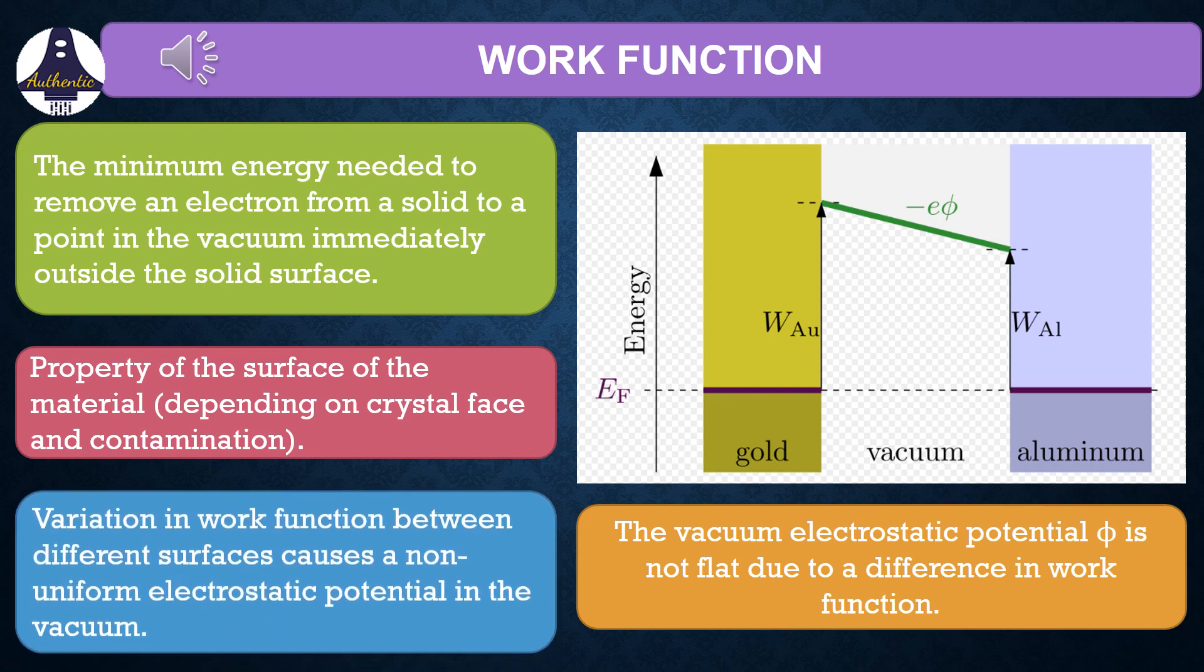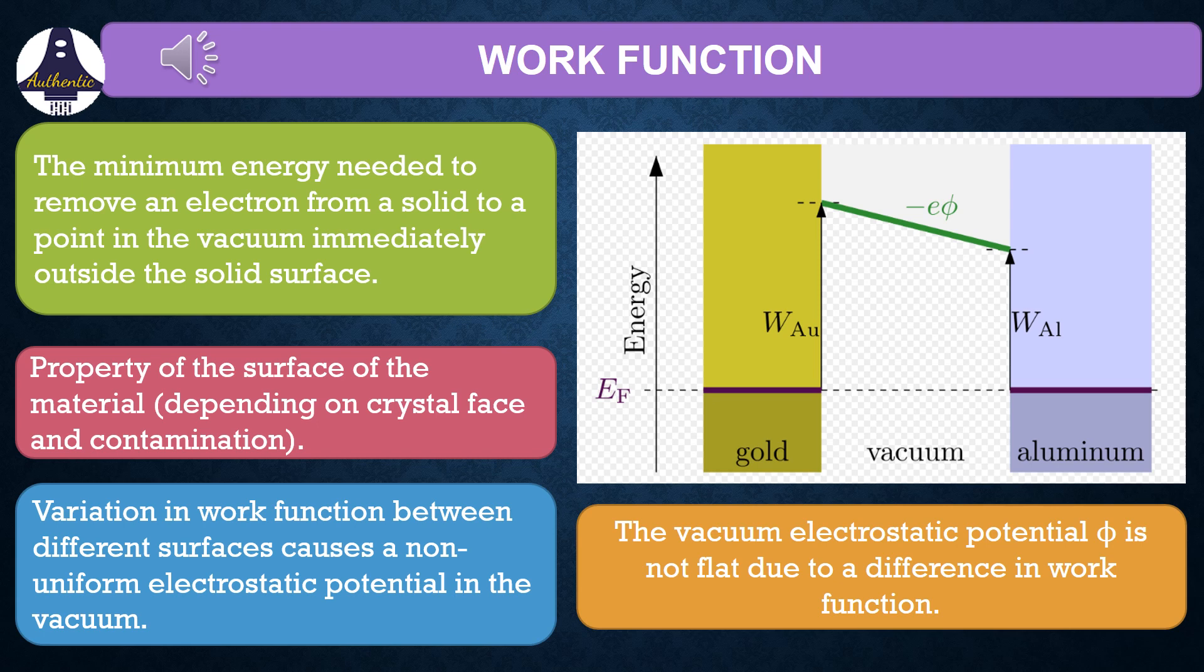And variation in the work function between different surfaces causes a non-uniform electrostatic potential in the vacuum. Now in the picture given, Wa is the work function of gold and Wal is the work function of aluminum and E5 is the potential difference.